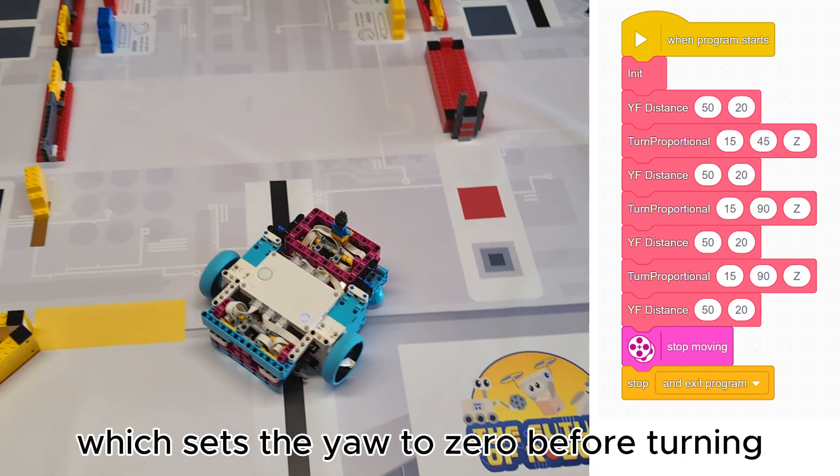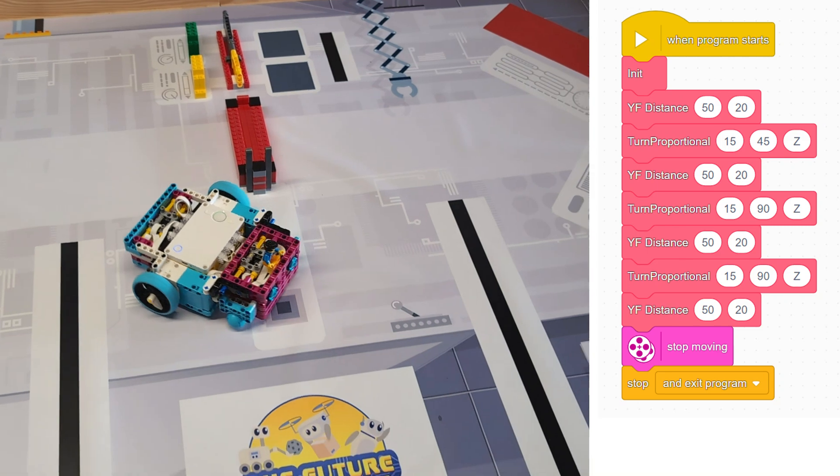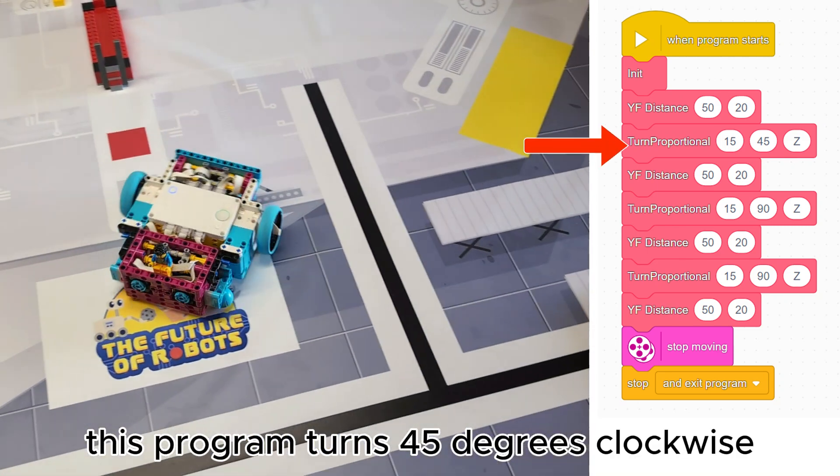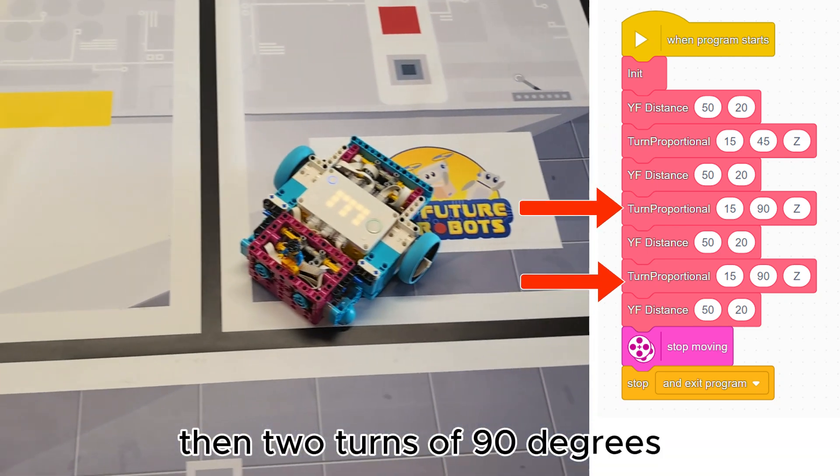First, let's use the mode which sets the yaw to zero before turning. This program turns 45 degrees clockwise, then two turns of 90 degrees.